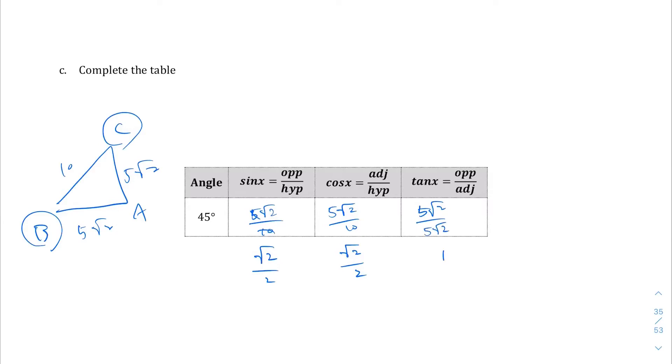So what you should get for the table values here are √2/2, √2/2, and 1.